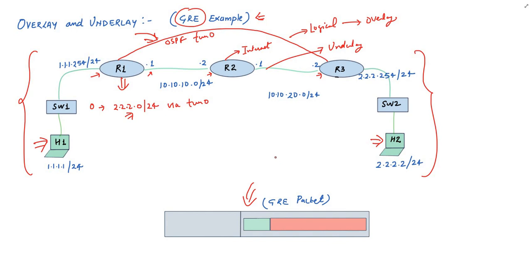As H2 is in a different network, host H1 will send this ping packet to its default gateway, which is R1. This packet will have source IP of 1.1.1.1 and destination IP of 2.2.2.2. This packet will reach R1.